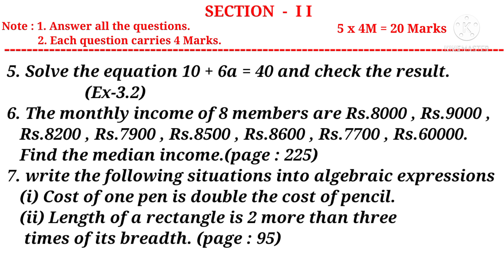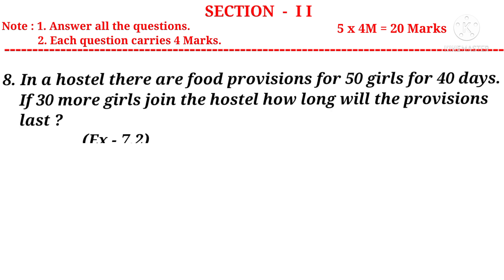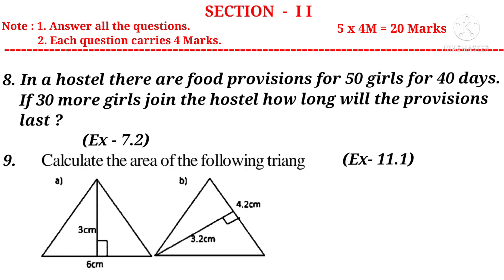Number 7: Write the following situations as algebraic expressions. 1) Cost of one pen is double the cost of a pencil. 2) Length of a rectangle is 2 more than 3 times of its breadth. It is a question from Algebraic Expressions. Number 8: In a hostel, there are food provisions for 50 girls for 40 days. If 30 more girls join the hostel, how long will the provisions last? It is from Ratio and Proportion. Number 9: Calculate the area of the given triangles, from the chapter Area of Plane Figures.